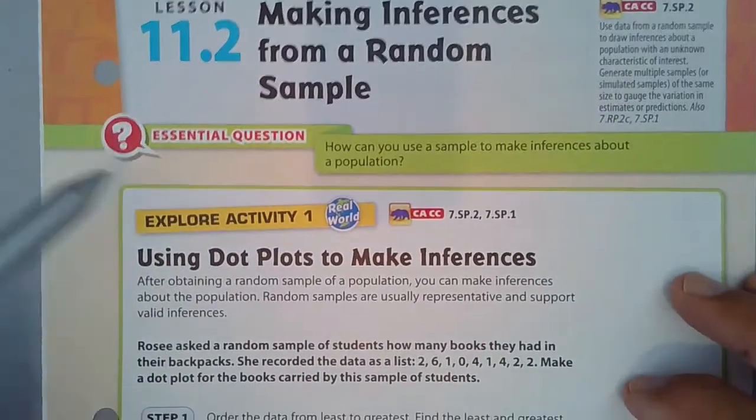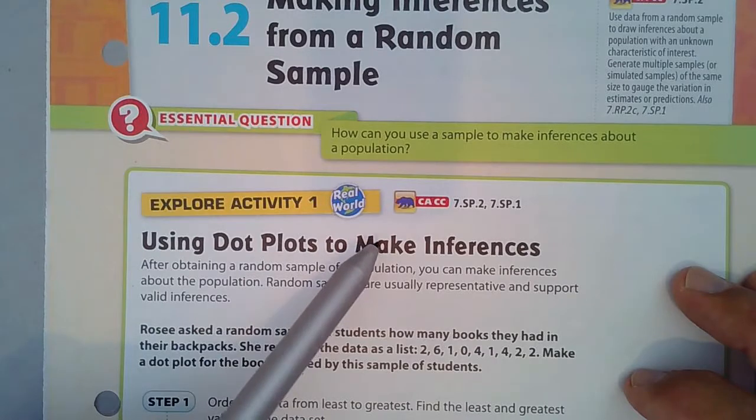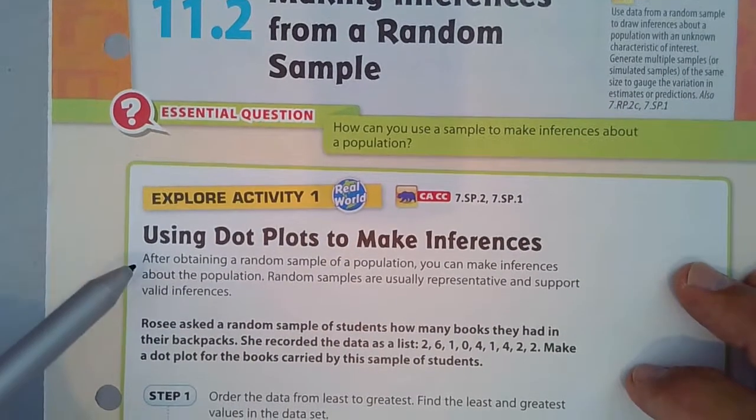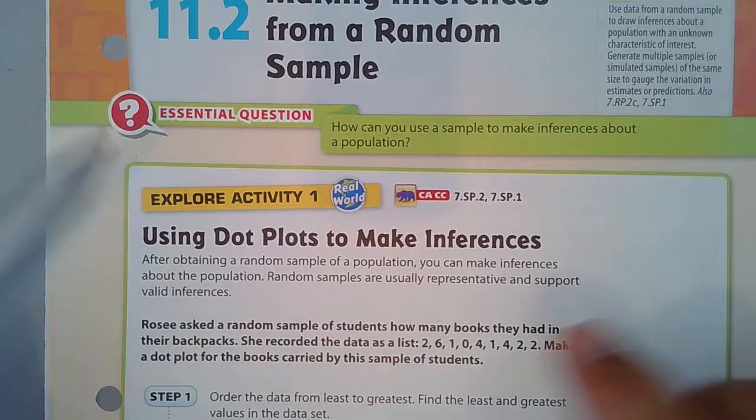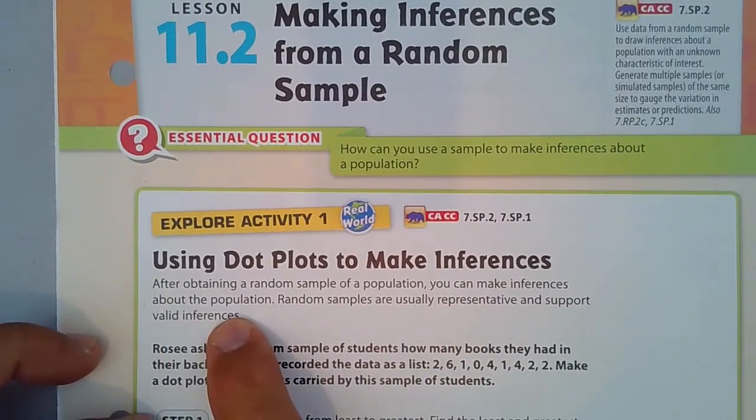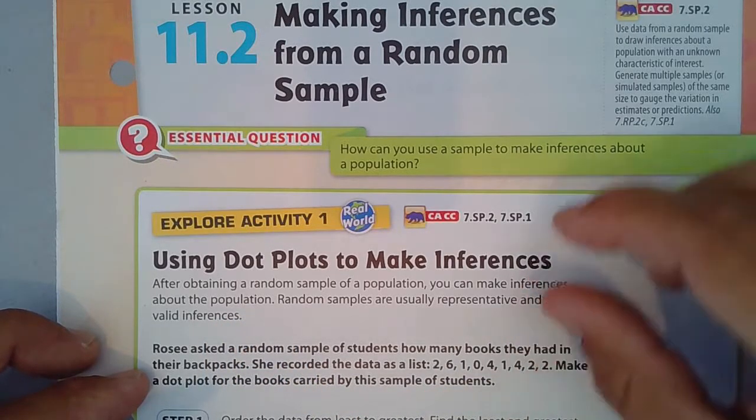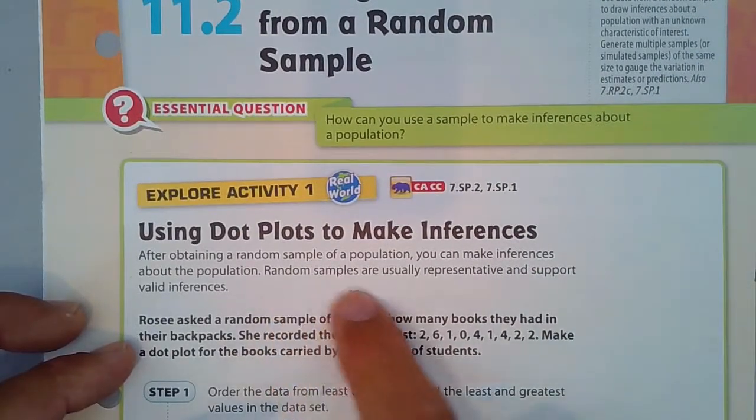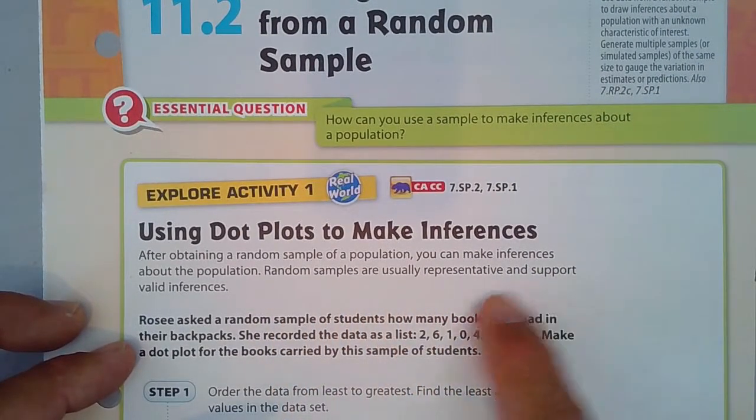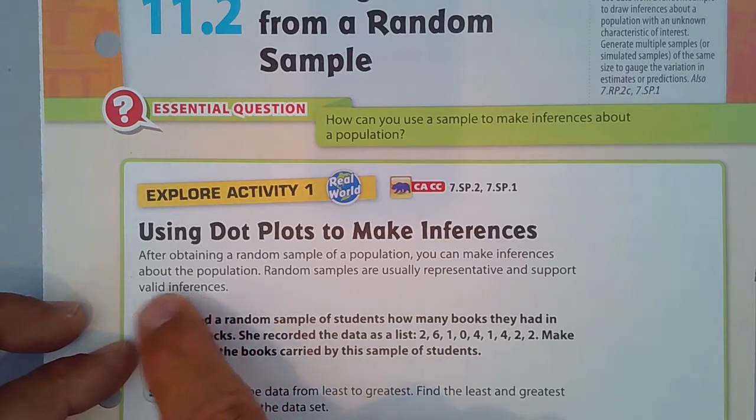Our Explore Activity number one is using dot plots to make inferences. After obtaining a random sample of a population, which was talked about in 11.1, you can make inferences about the population, which means you can describe that population. Random samples are usually representative and support valid inferences, which means those descriptions of that population are true.